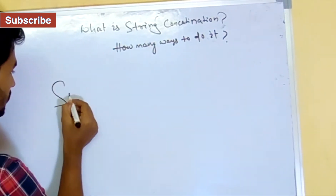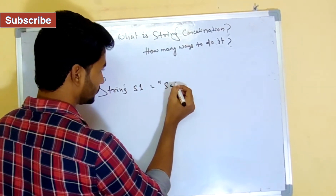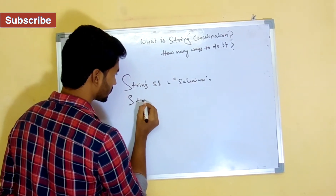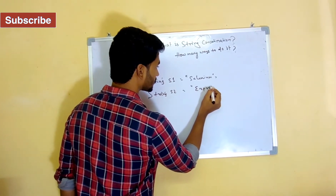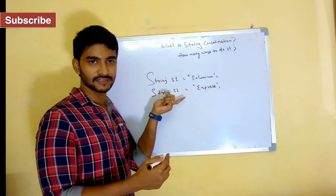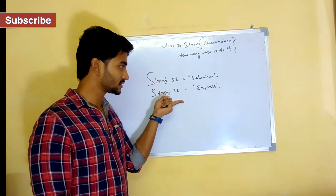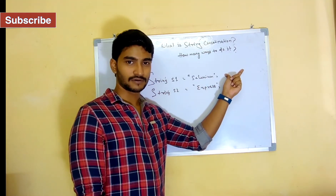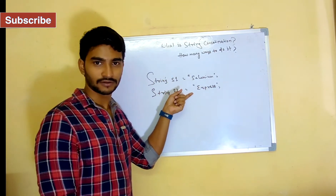Let's say I have two different strings: string s1 equal to 'selenium' and string s2 equal to 'express'. Selenium Express is my channel name, but I have two different strings instead of one. One string is 'selenium', one string is 'express'. What I want to do is add 'express' after 'selenium' to form a complete string by adding both strings.